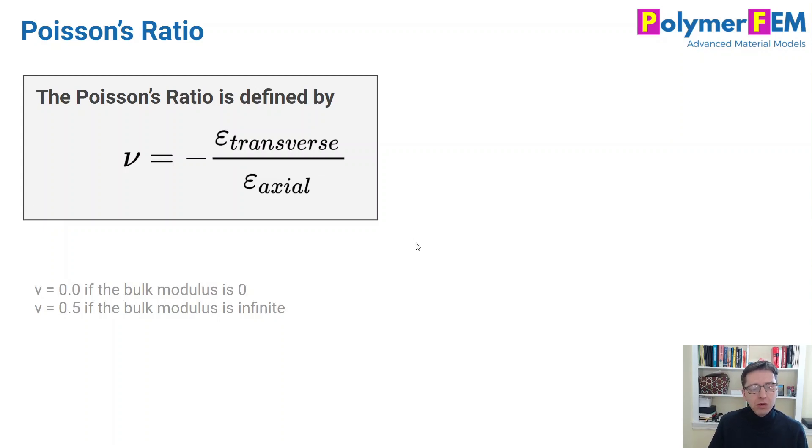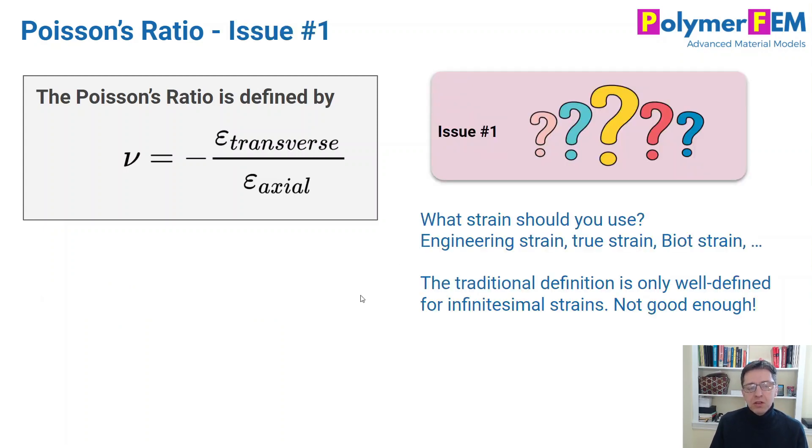So what are the three issues with the Poisson's ratio? The first issue is what strain should you use? This is a ratio of two strains. And this is such a common problem that people say the strain was this. Well, what strain? Because when we talk about polymers or other materials that can be deformed more than 1%, there are different strain measures you can use. You can use engineering strain, true strain, some other strain. So you can't just say that Poisson's ratio is the ratio of these strains. You need to say what strain you're using. And depending on what strain you're using, you will have a different Poisson's ratio. So clearly, it's not really that well-defined.